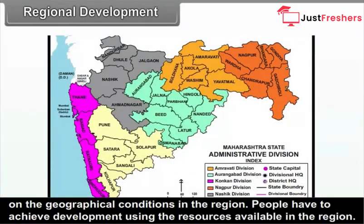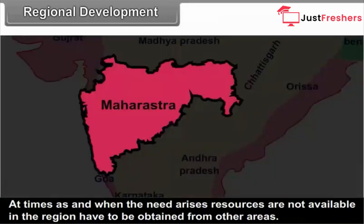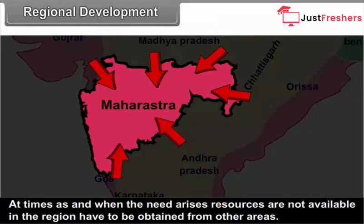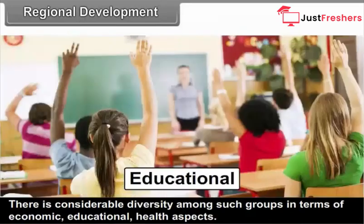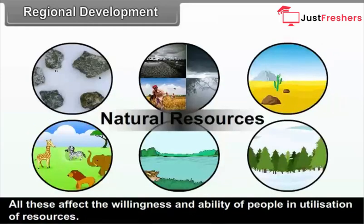People have to achieve development using the resources available in the region. At times, as and when the need arises, resources not available in the region have to be obtained from other areas. In any society, there exist a number of groups of individuals. There is considerable diversity among such groups in terms of economic, educational, and health aspects. Similarly, their customs, way of life, traditions, beliefs, and faith also differ considerably. All these affect the willingness and ability of people in the utilization of resources.